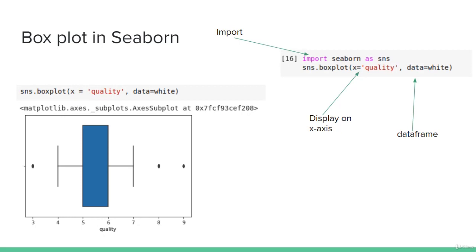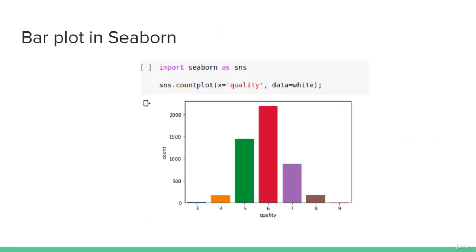For visualizing a box plot in seaborn, we call the box plot function, specify x as the column we want to visualize, pass the dataframe as data, and set the background to white. We import seaborn as sns and specify the x value to determine which column appears on the x axis. For a bar plot in seaborn, we call the count_plot function, specify quality using x, and pass the dataframe. Seaborn is quite simple — even simpler than pandas.